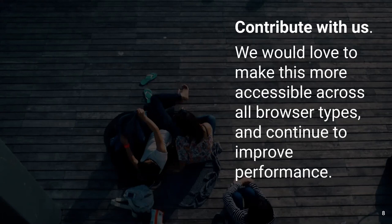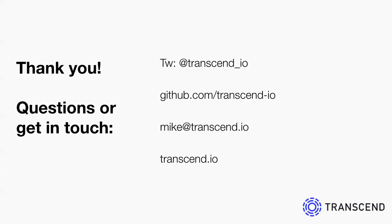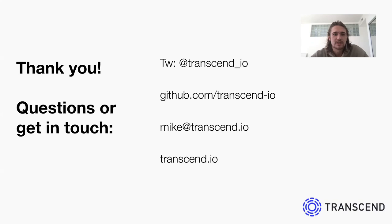Secondly, we want to improve the API for the web worker communication channel. Thirdly, we want to increase the flexibility of encryption schemes that Penumbra can support. Thank you everyone for listening. I hope this was a great way to provide a bit of insight about how Transcend thinks about end-to-end encryption. Please get in touch if you have any questions or would like to talk more about data rights and privacy infrastructure.